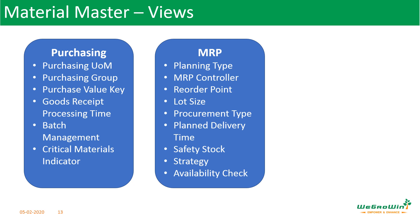The MRP views enable planners to define how to procure the material and how to plan and control it in the production process. Here, the procurement type is defined — whether it is externally procured or internally procured, or both. Some materials may be produced in-house and also procured externally — both types can be enabled in the system. You can also specify what the reorder point is, whether it is demand-driven, what is the lot size, what is the safety stock, and what is the planning strategy to be followed — like make-to-stock, make-to-order, or assemble-to-order.